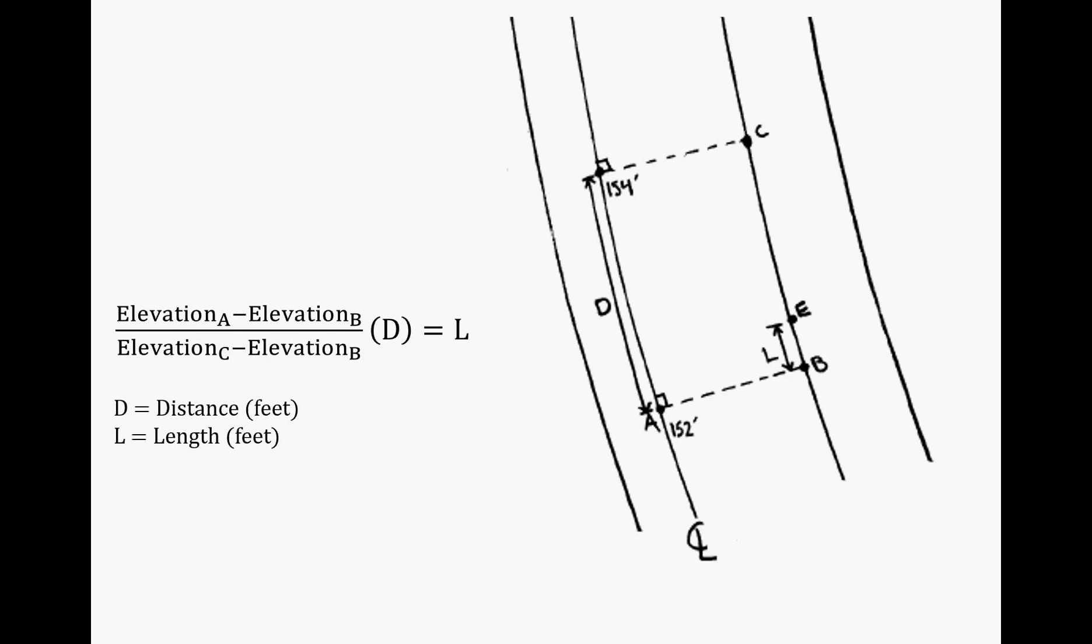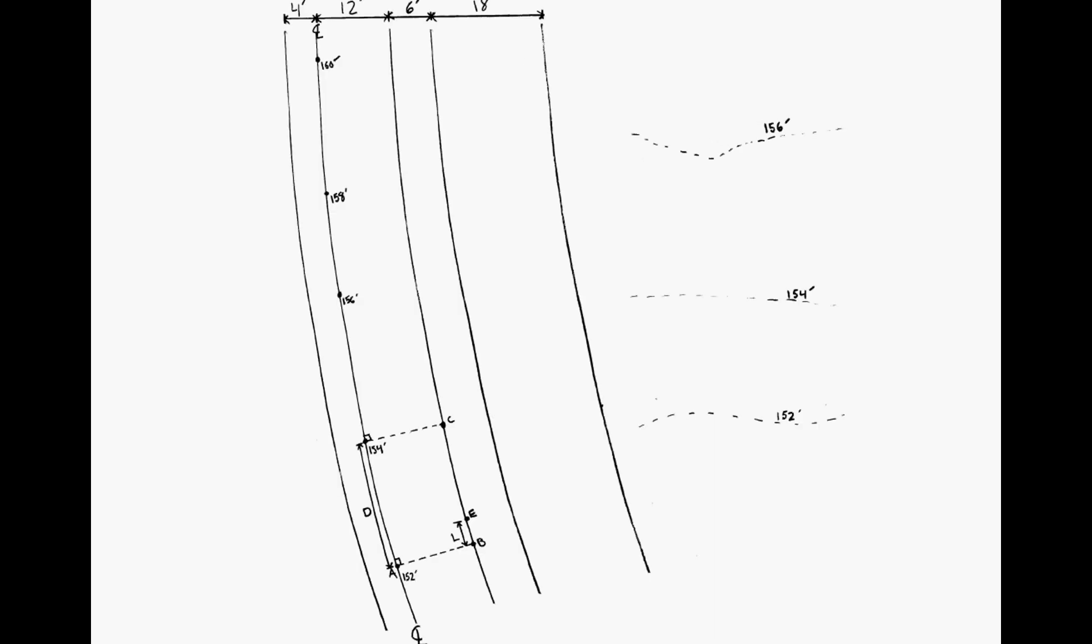E is developed based on the length L given by the equation: (Elevation_A - Elevation_B) / (Elevation_C - Elevation_B) × D = L. We'll go through some examples of how this is actually applied in this case.